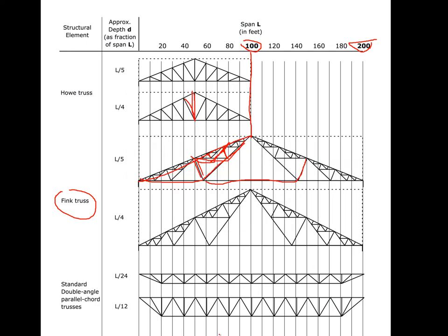We're going to talk about Fink trusses, but first we'll cover parallel chord trusses, which are the most common configuration — easy to manufacture and effective for floors and roofs. Pitched trusses shed water better and can use shingles, but shingles need a slope of about 3-in-12. Parallel chord trusses used for roofs require a sealable membrane, which is often problematic but is our most common construction method today.